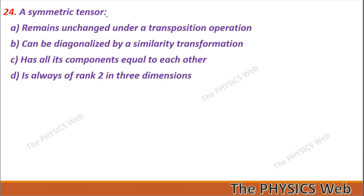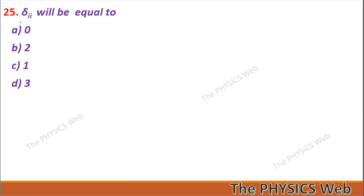Question 23: The symbol that represents the alternating operator is the Levi-Civita symbol — so B is your correct option. Question 24: A symmetric tensor remains unchanged under a transposition operation — so A is your correct option. Question 25: The Kronecker delta δ_ii equals 3 — so D is your correct option.